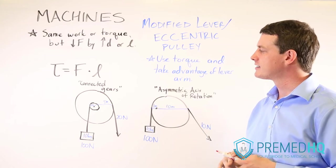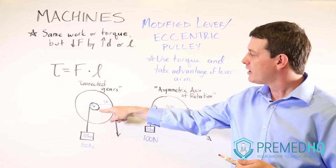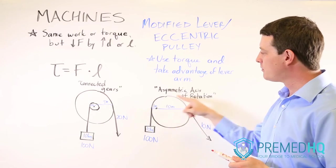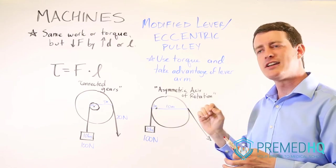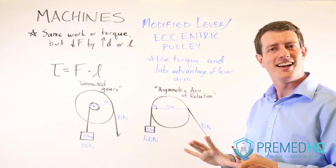And the way you recognize these is by having two gears that are connected, where one of the gears is smaller than the other one, or if you have a single pulley-like apparatus, but it doesn't rotate around the center. Instead its axis of rotation is centered somewhere else over to the side.